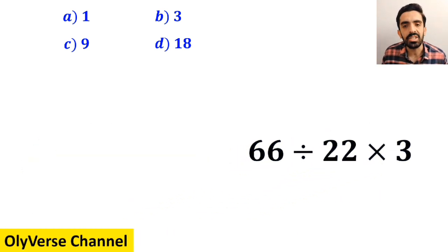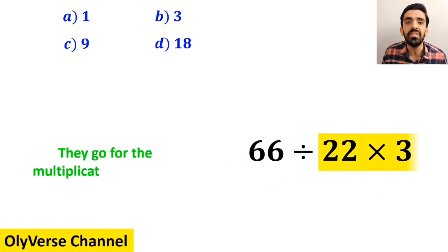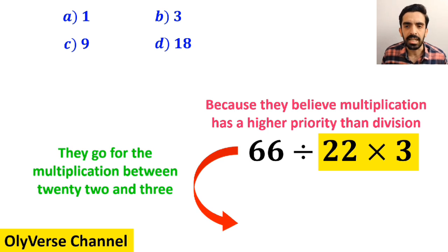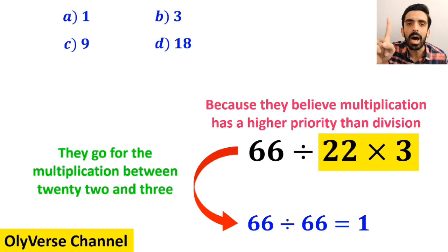At the next step, they go for the multiplication between 22 and 3 because they believe multiplication has a higher priority than division. So they simplify this expression and write it as 66 divided by 66 which finally gives them the answer 1.